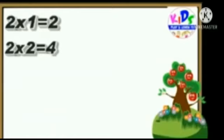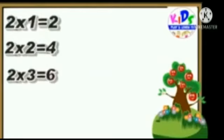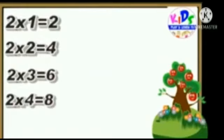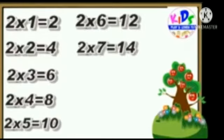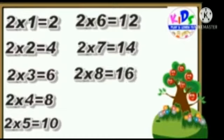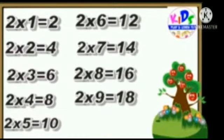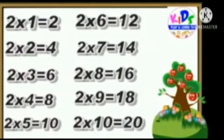Now let's repeat. 2 1's is 2. 2 2's is 4. 2 3's is 6. 2 4's is 8. 2 5's is 10. 2 6's is 12. 2 7's is 14. 2 8's is 16. 2 9's is 18. 2 10's is 20.